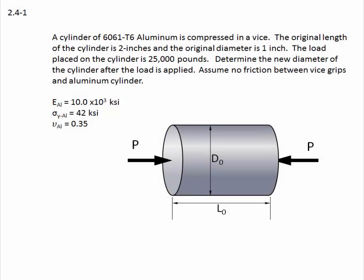Problem 2.4-1. A cylinder of 6061-T6 aluminum is compressed in a vise. The original length of the cylinder is 2 inches and the original diameter is 1 inch.